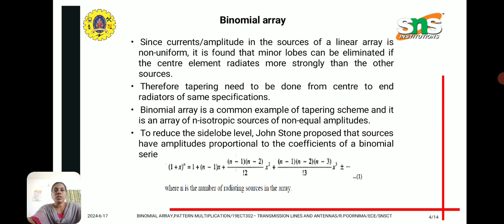In a binomial array, the current amplitudes in the sources of a linear array are non-uniform. It is found that minor lobes can be eliminated if the center element radiates more strongly than the other sources. Therefore, tapering needs to be done from center to end radiators of the same specification. The binomial array is a common example of a tapering scheme, and it is an array of n isotropic sources of non-uniform, non-equal amplitudes.